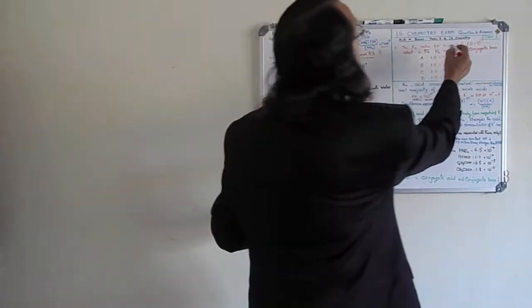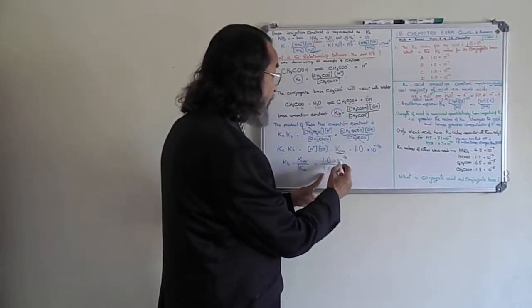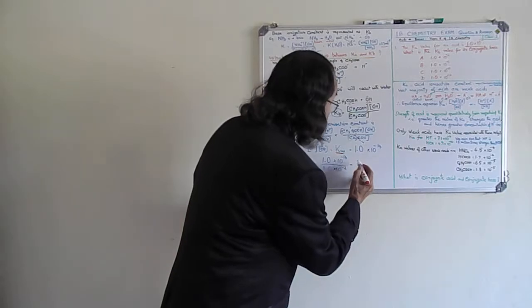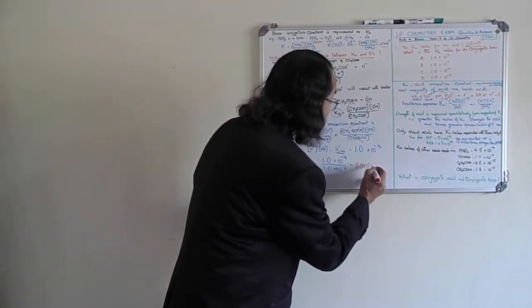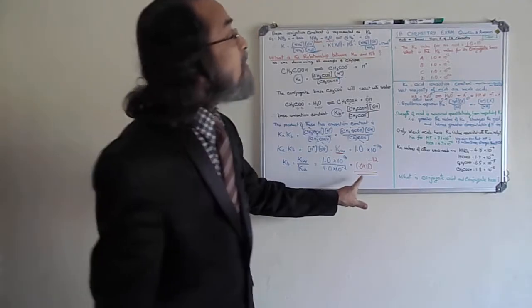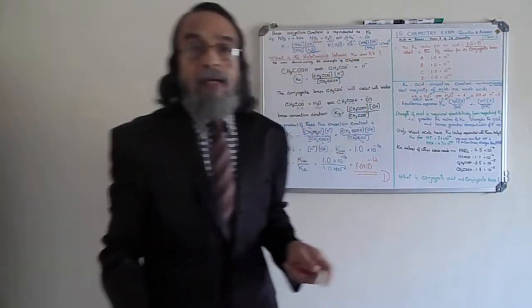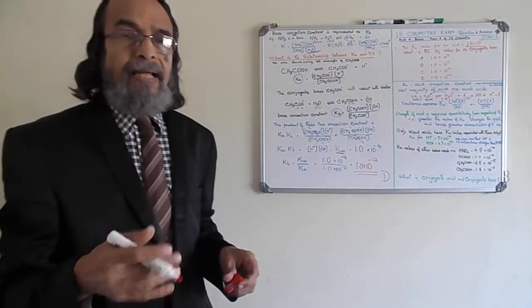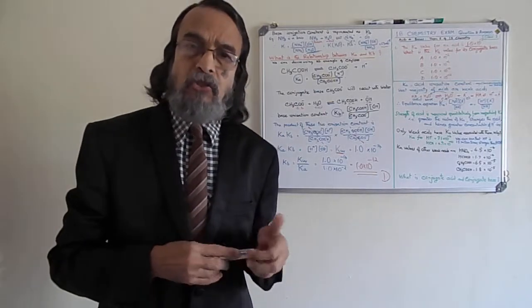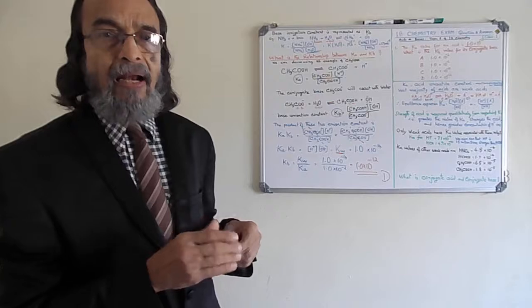Substituting the values: Ka is given as 1 × 10⁻², and Kw = 1 × 10⁻¹⁴. Therefore Kb = (1 × 10⁻¹⁴) ÷ (1 × 10⁻²) = 1.0 × 10⁻¹². The answer to the question is D. In coming classes we will do the next multiple choice problems in these topics and the other 10 topics of IB Chemistry for Standard Level and Higher Level. Thank you.